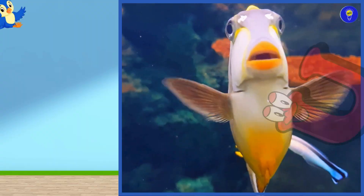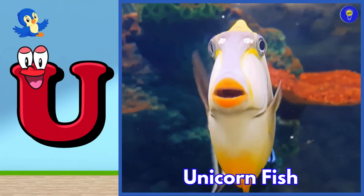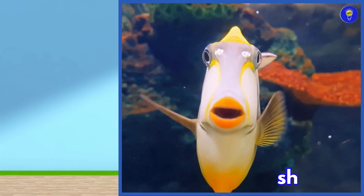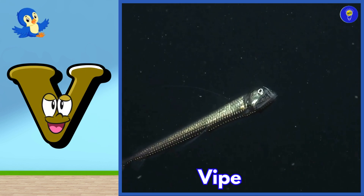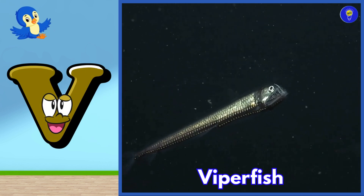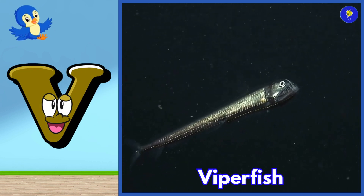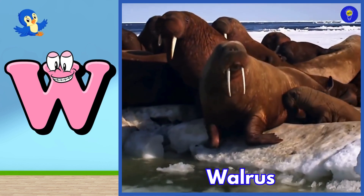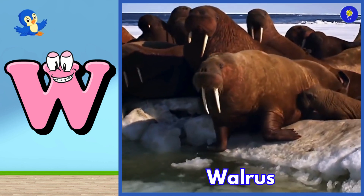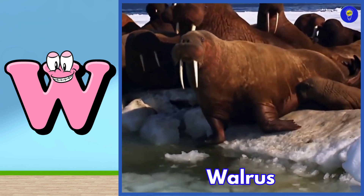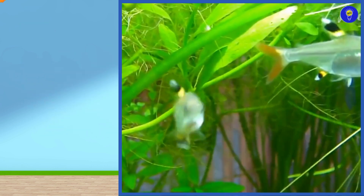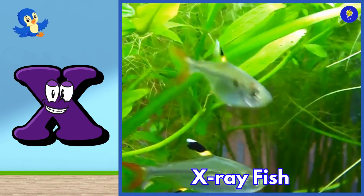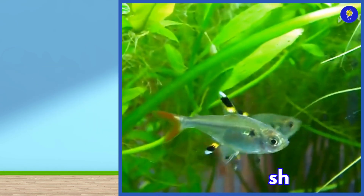U is for unicorn fish. Uh, unicorn fish. V is for viperfish. V, viperfish. W is for walrus. W, walrus. X is for x-ray fish. X, x-ray fish.